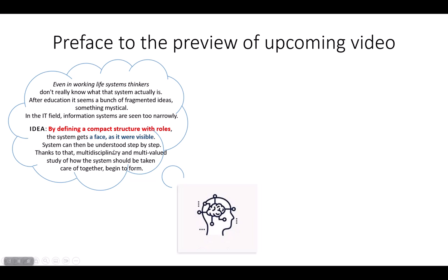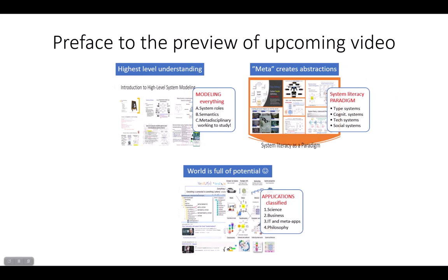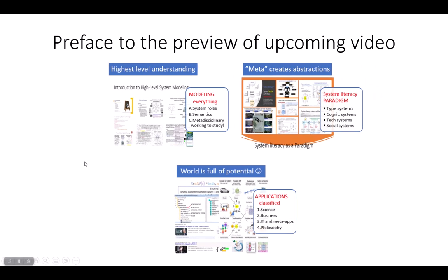It allows multidisciplinary and multi-valued study of how systems work. The first part introduces highest level understanding. The second, what is meta - meta creates abstractions from the further world. The third presents the potential of this thinking: modeling system roles, semantics, and meta-disciplinary approach.